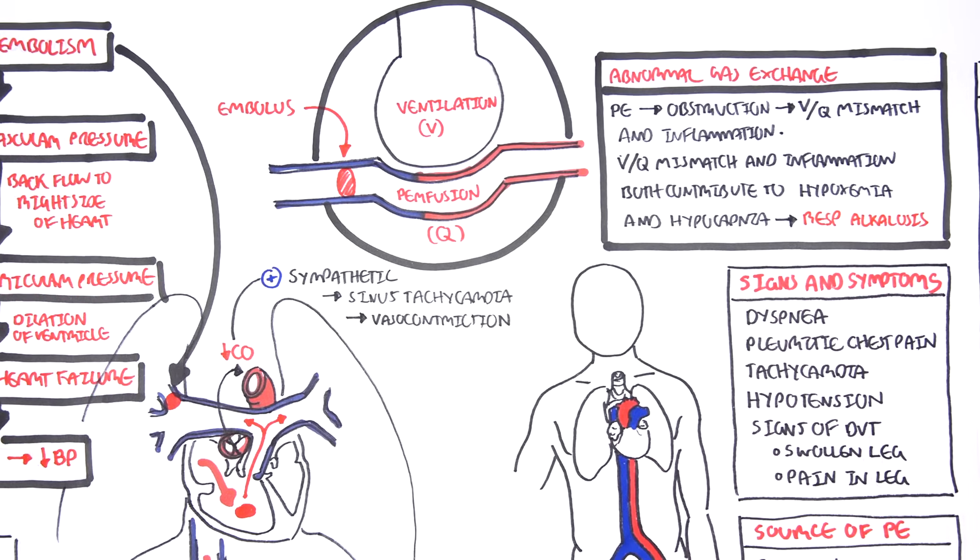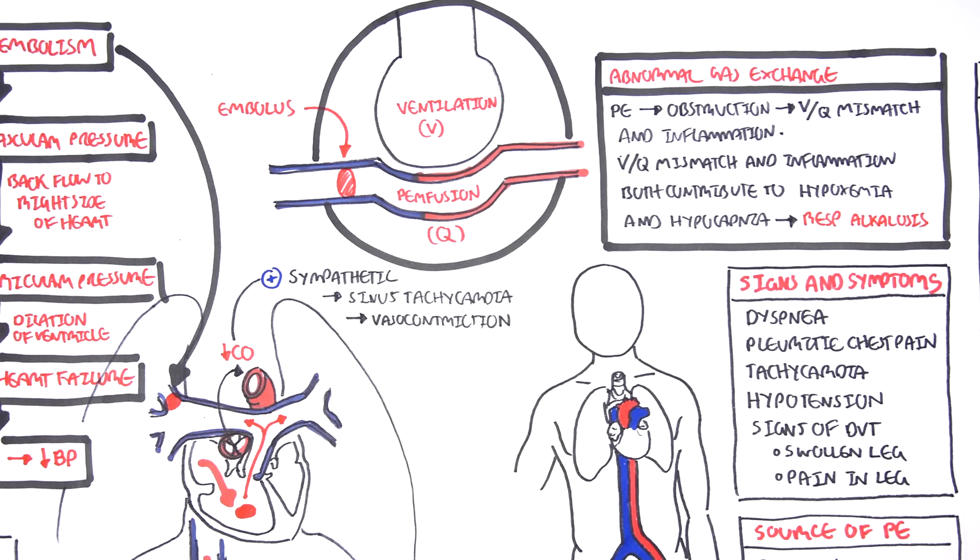The V/Q mismatch and inflammation both contribute to hypoxemia and hypocapnia, which leads to respiratory alkalosis. Respiratory alkalosis is what we can find when we do an ABG test, an arterial blood gas test.